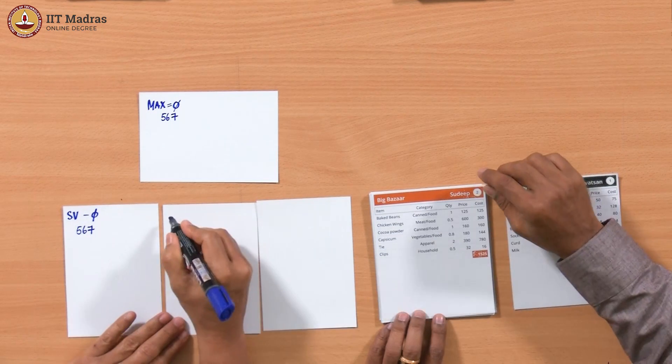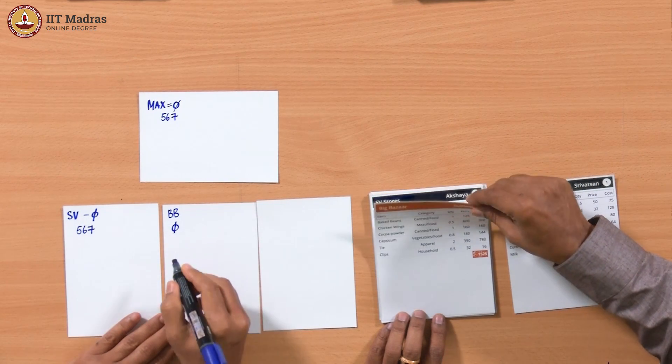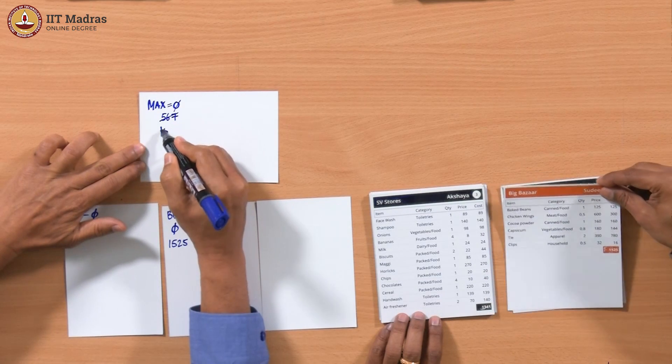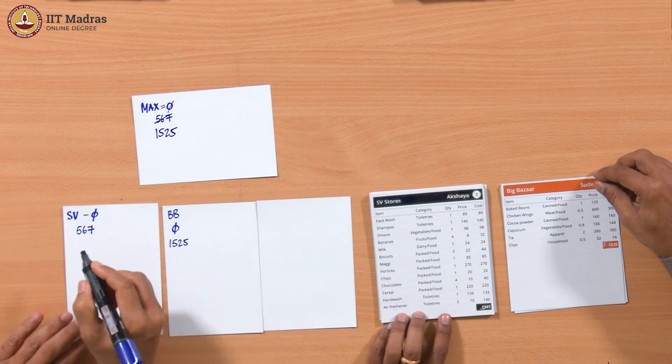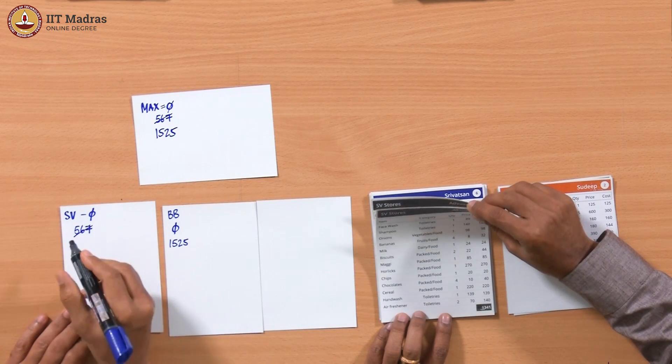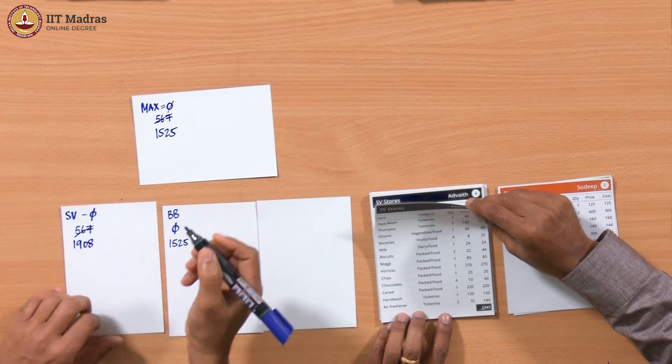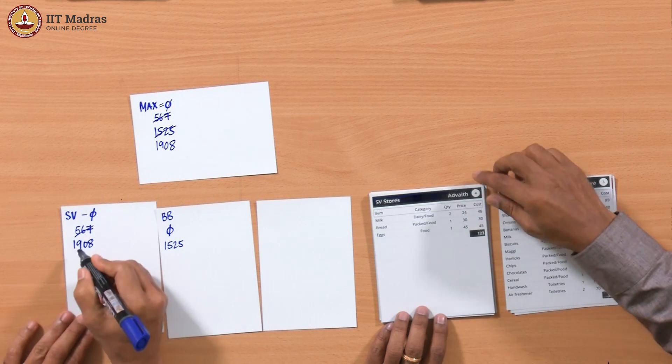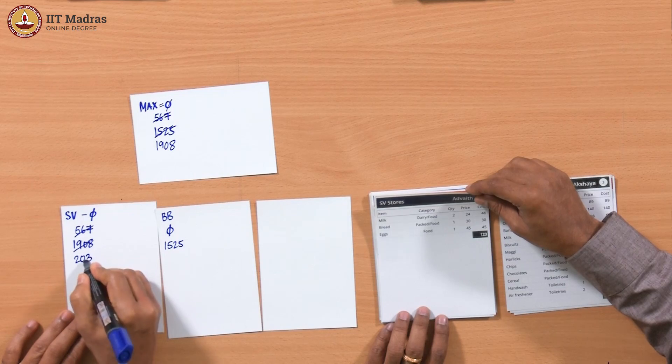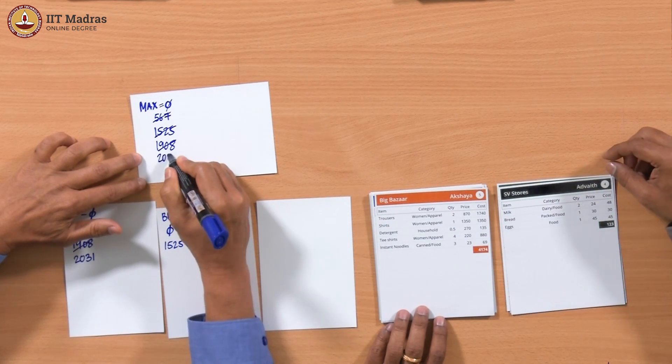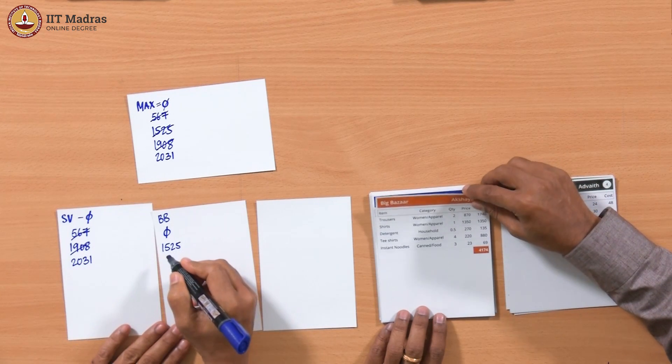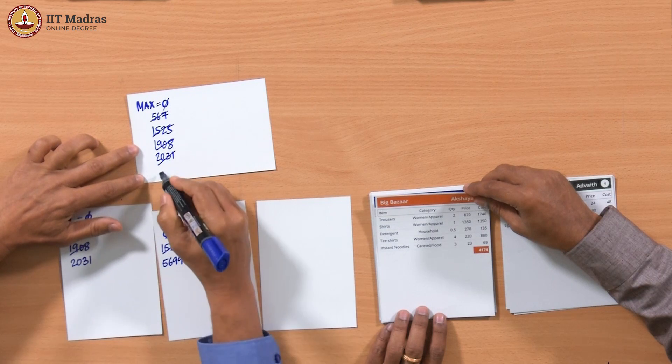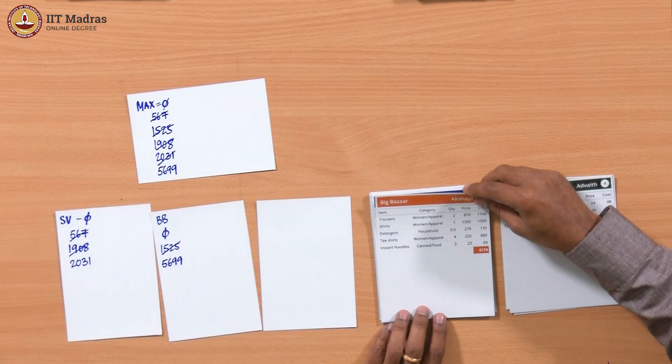Now we are seeing the second bill is from Big Bazaar. This is a new shop so we need a new total. I start with 0 and then 1525 is the value. This is the first bill for Big Bazaar but this is bigger than the maximum we had, so the maximum now becomes 1525. Now we are seeing SV stores again with 1341. We add 1341 and get 1908, which now makes the total higher than max. So 1908 is now the maximum. SV stores once again, 123. This becomes 2031 which again is more than max. Now Big Bazaar again, 4174. So this becomes now 5699. So the maximum sum we have seen so far is 5699.